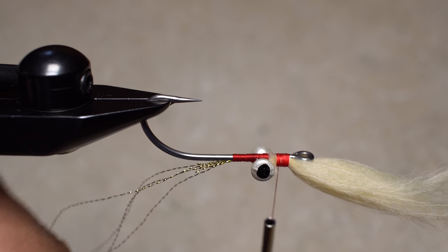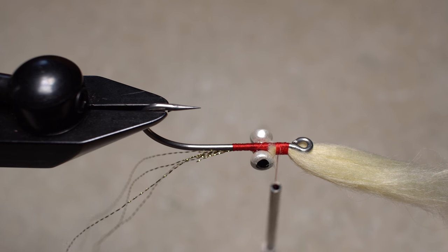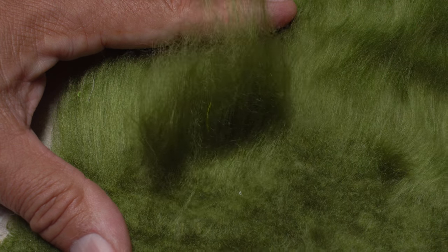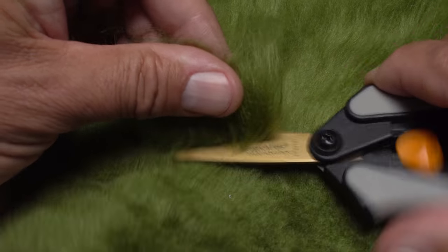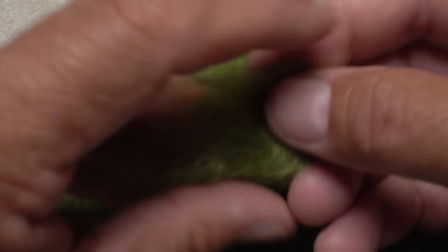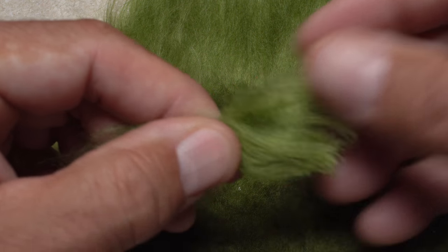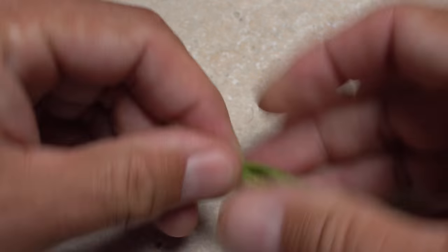Rotate your vise or reorient your hook so the bottom side of the shank faces up. Then, tease up another one inch square of craft fur, this time in medium olive. When you've got it looking good, snip it off close to the hide. Once again, roll the fur into a manageable clump. The more underfur you can clean out, the easier it will be to tie in the fur.